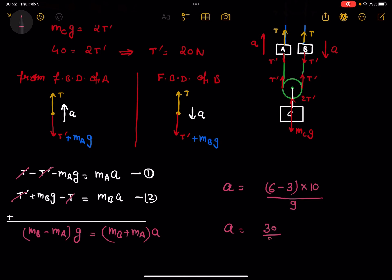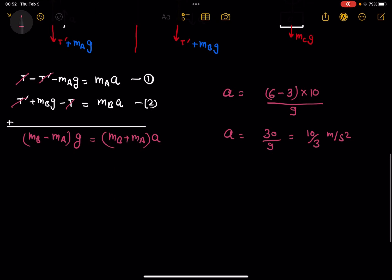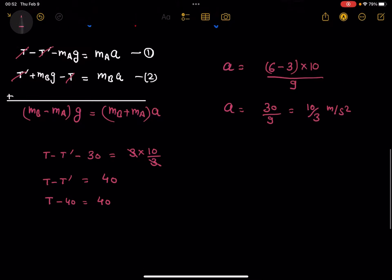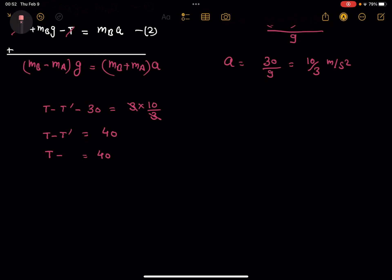Adding these two equations, T and T cancel out, T prime and T prime cancel out, giving: (MB minus MA)×G equals (MB plus MA)×a. So the acceleration of blocks A and B is: a equals (6 minus 3)×10 divided by (6 plus 3) equals 30/9 equals 10/3 m/s². So C remains at rest, while A and B move with acceleration 10/3 m/s².